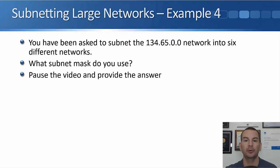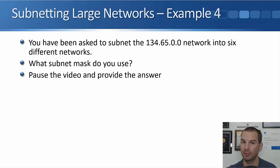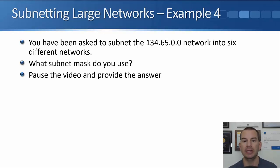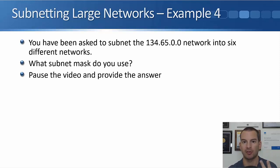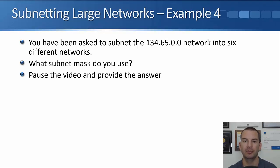Let's do one more example. You've been asked to subnet the 134.65.0.0 network into six different networks — what subnet mask are you going to use? The network is 134.65.0.0, so we know it's a class B network. We need to split it into six networks, so we're going to need three bits because it's two, four, eight. It's a class B, so the default subnet mask is a slash 16. We need six networks which requires three bits, so we add three to the slash 16, and that gives us a slash 19.